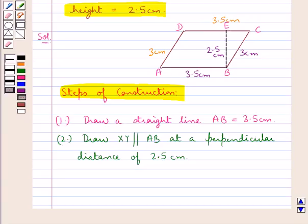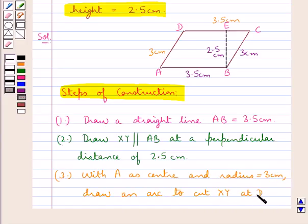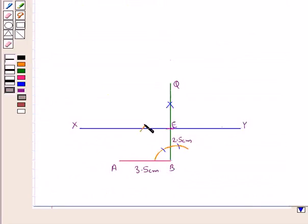Now we need to locate the points C and D of the parallelogram ABCD. With A as center and radius equal to 3 cm, draw an arc to cut XY at point D. We have drawn this arc such that it cuts the line XY at point D. So this is the point D.